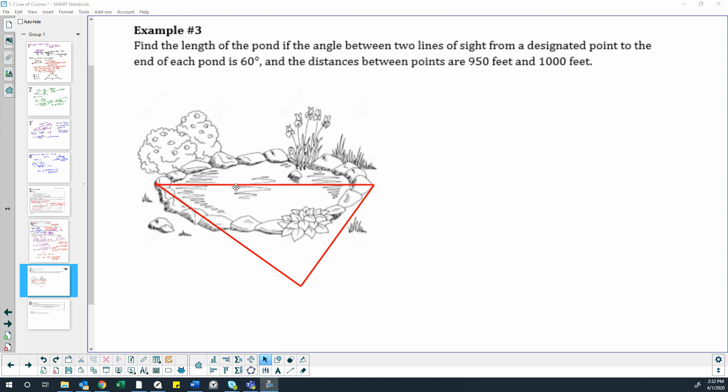All right, here's a pond. We're finding the length of the pond. We have a designated point where we're taking sights from each end of the pond. So this is 60 degrees, and then one of the distances is 1,000 feet and the other distance is 950 feet.